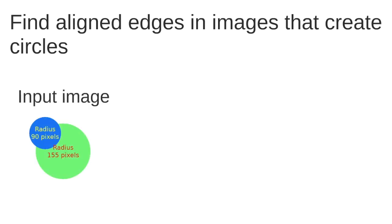Suppose we have one input image as this image here. We have a white background and we have two circles. This circle has a radius of 90 pixels and this green circle has a different radius. The size of this green circle is 155 pixels.